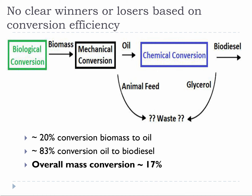For biodiesel production, oilseed crops only have about 20% bio-weight oil. So in extracting the oil from an oilseed crop, you get about a 20% conversion of biomass to oil. However, the conversion of oil to biodiesel is fairly high at 80 to 85%, leading to an overall mass conversion of around 17%.